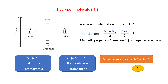Hydrogen molecule is formed by the combination of two hydrogen atoms. Each hydrogen atom has one electron and one atomic orbital. When these two atomic orbitals combine, they produce two new molecular orbitals: sigma 1s (the bonding molecular orbital) and sigma star 1s (the anti-bonding molecular orbital).